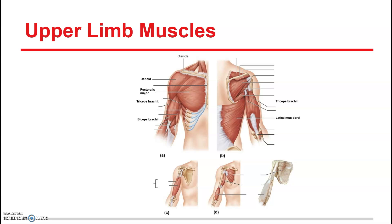Moving to the upper limb muscles, here is the pectoralis major — that's the big chest muscle — and you can see the anterior part of the deltoid. In anatomical position, the muscle on the anterior upper arm is the biceps brachii. If you flex like Popeye, you've contracted your biceps brachii. The triceps are involved in pushups, particularly when your hands are spread apart. This illustration shows the triceps brachii — so we have the biceps and triceps brachii.